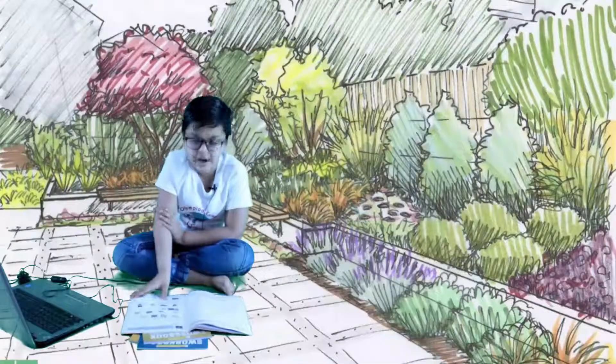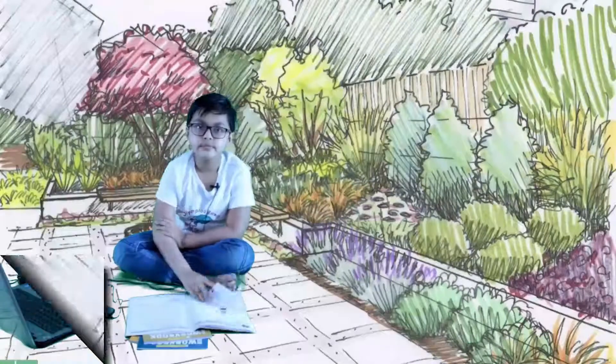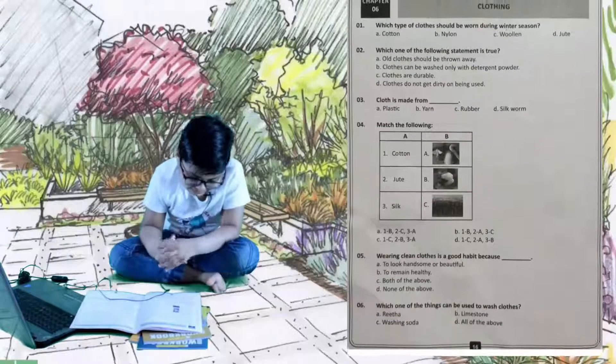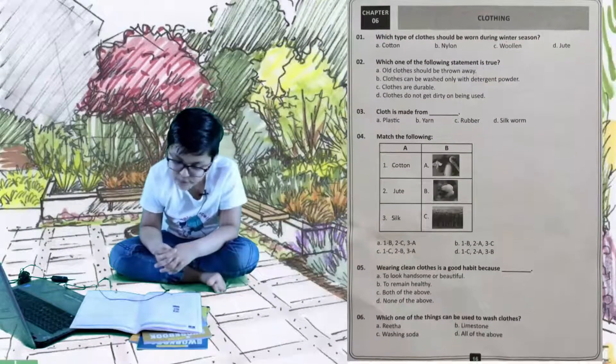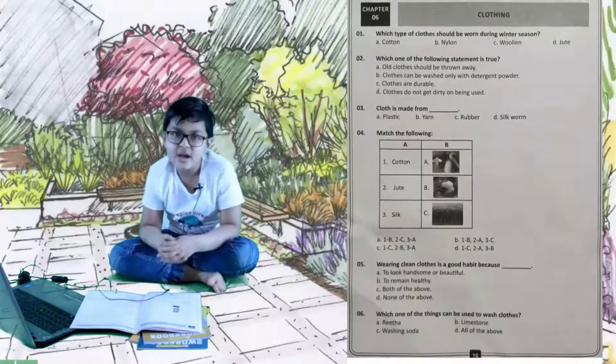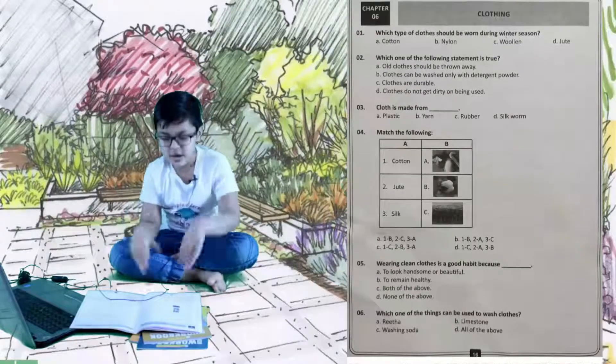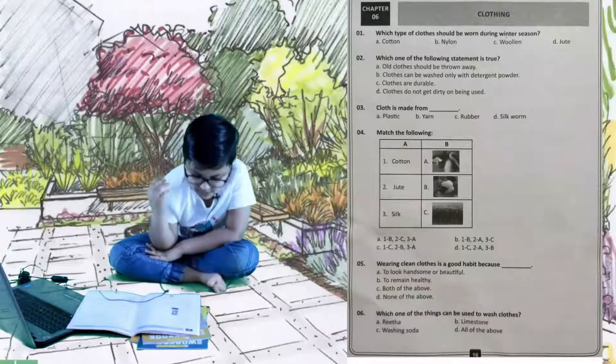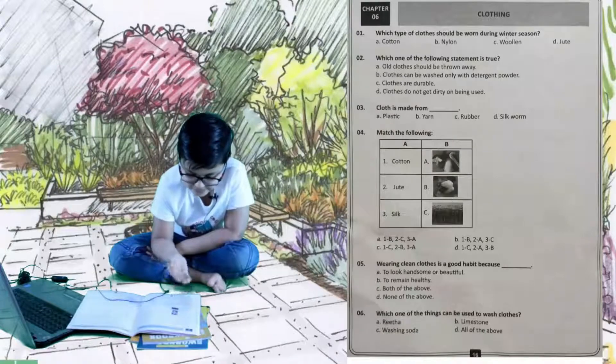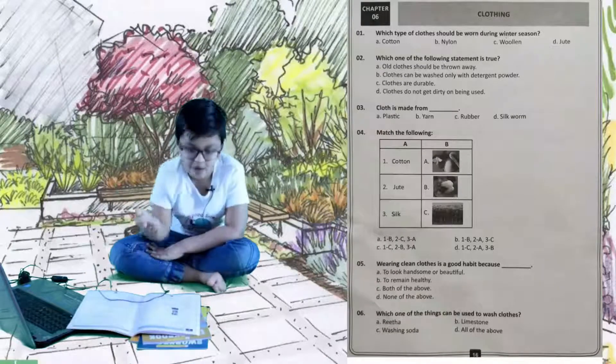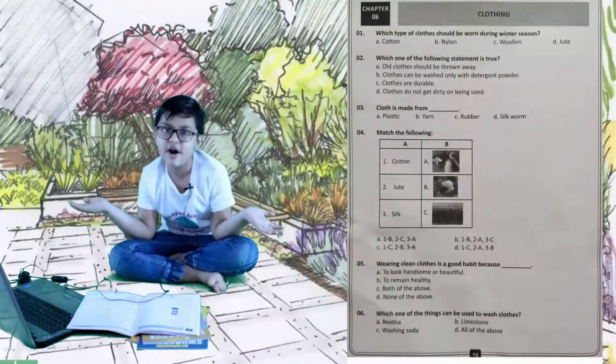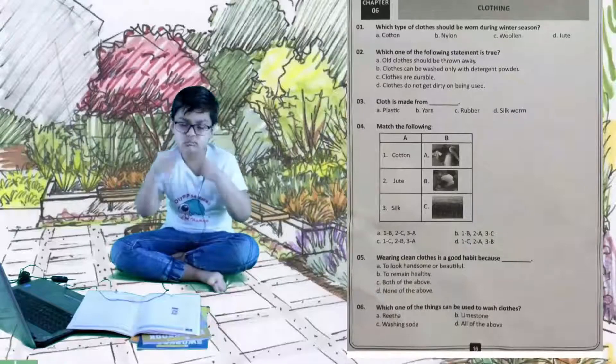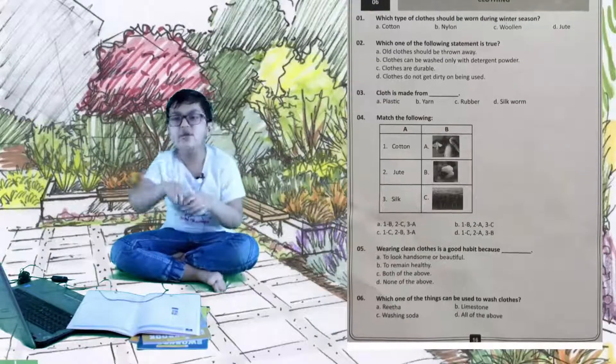Let's go to the next chapter, chapter 6, that is clothing. First question: which type of cloth should be worn during winter season? A is cotton, B is nylon, C is woolen, and D is jute. Easy, it is woolen of course. Let's do the third question: clothes are made up of. A is plastic, B is yarn, C is rubber, D is silk. The right answer is yarn. Yarn is like threads, and threads are woven to make a ball, and then you could also make cloth with it.